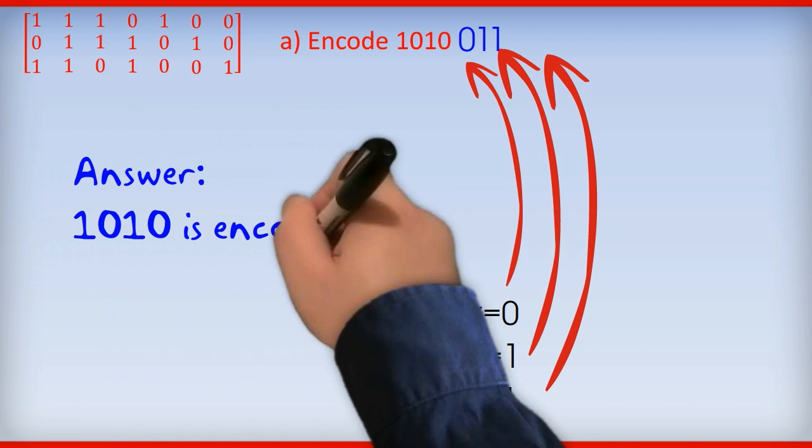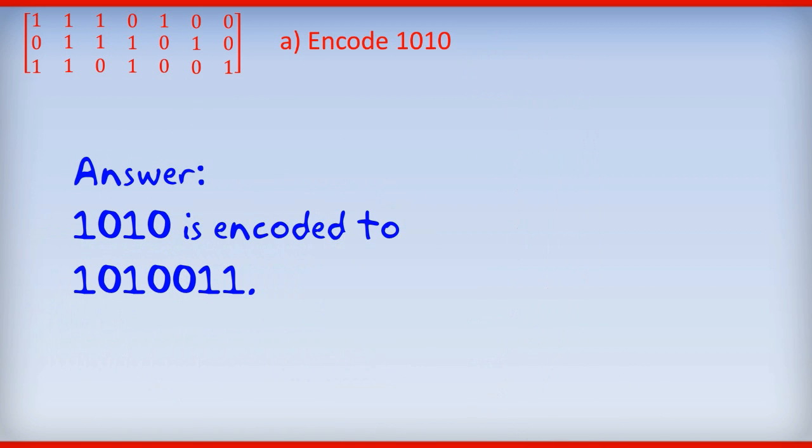And so the answer is 1, 0, 1, 0 is encoded to 1, 0, 1, 0, 0, 1, 1.